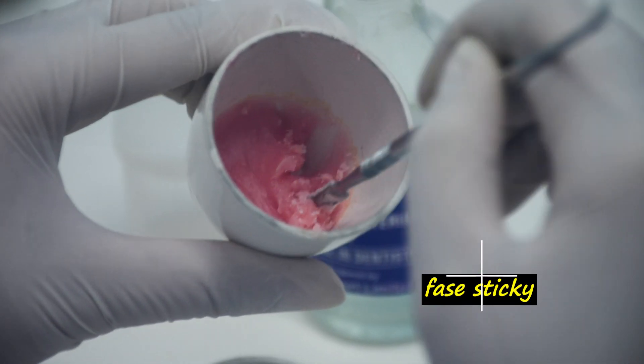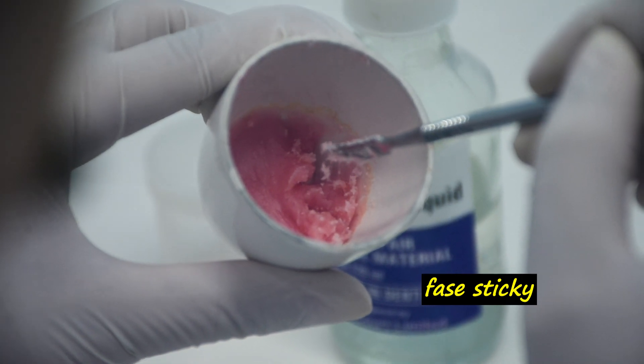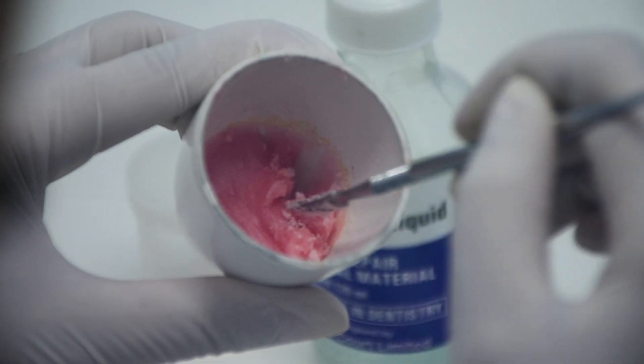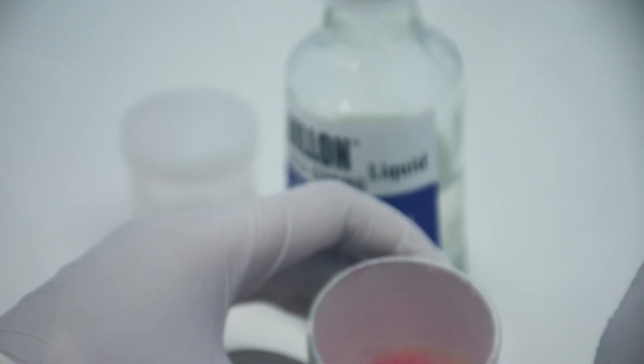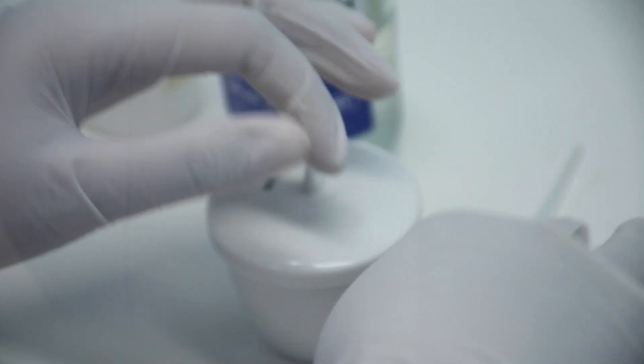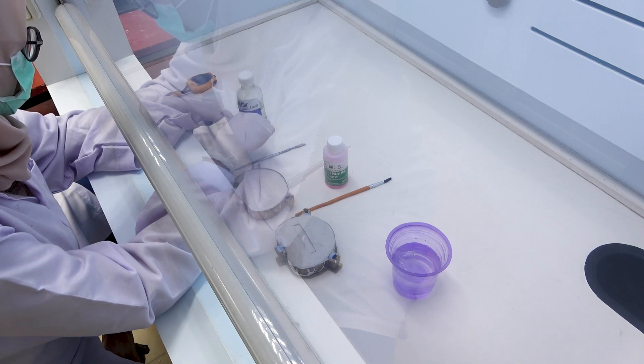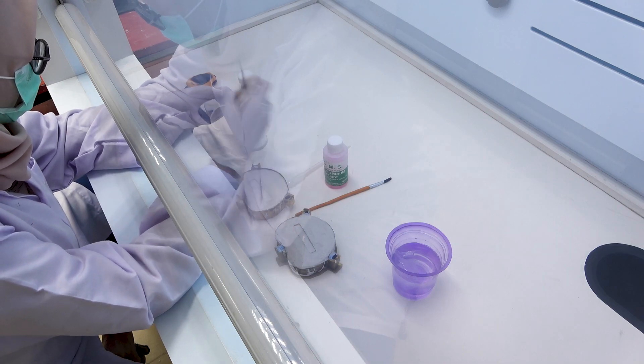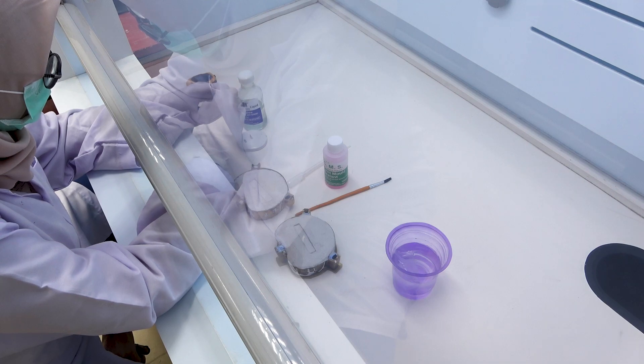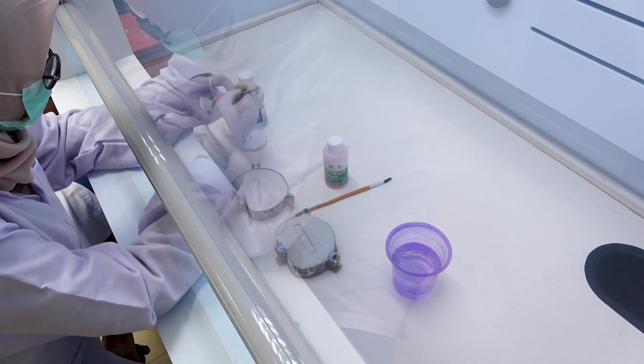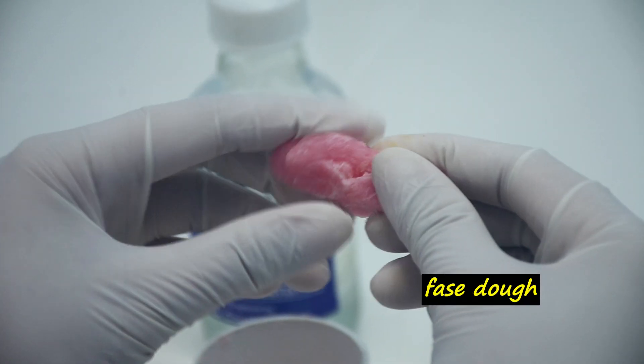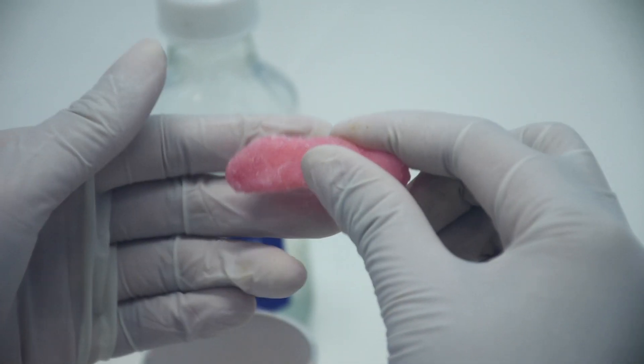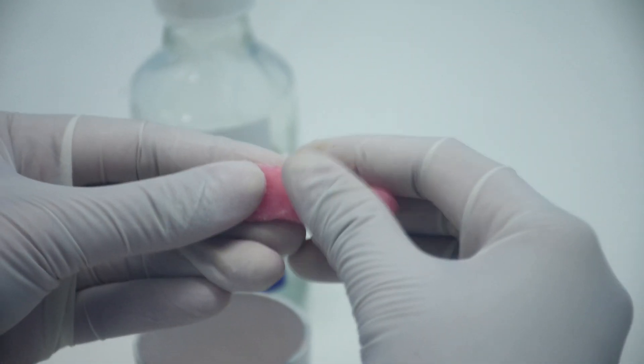If the dough phase hasn't been reached, close the dappen dish again. Note that if the resin mixture has passed the dough phase into the rubbery phase, the resin mixture can no longer be used.